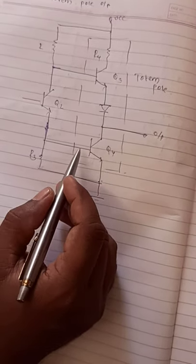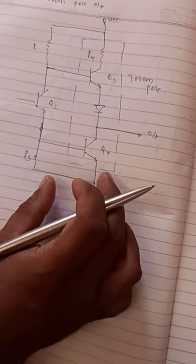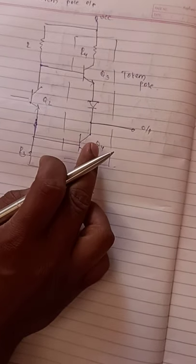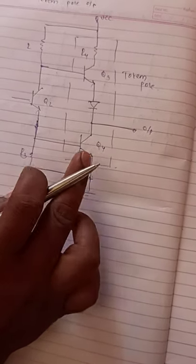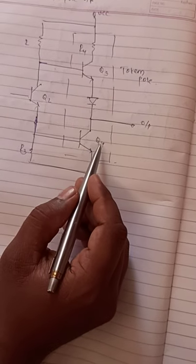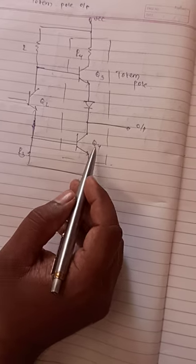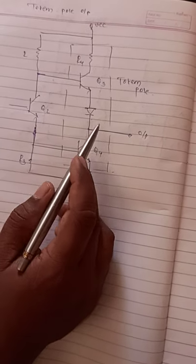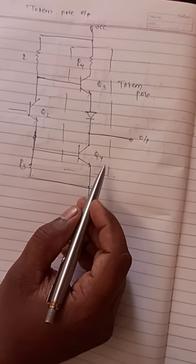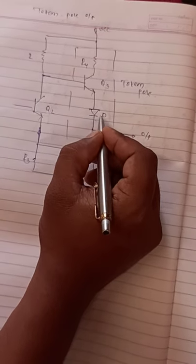Q3 and Q4 are connected in a totem pole fashion. At any time only one of them will be conducting - Q3 or Q4. They will not be working simultaneously. Either Q3 or Q4 will work. And diode D, here is the diode D.